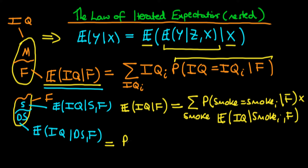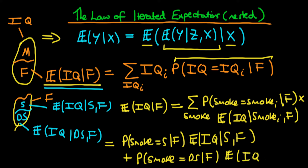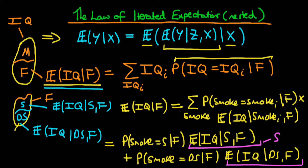So there are just two cases to sum over. First, the probability that smoking equals S — an individual smokes — given that they are female, times the expected value of IQ given that individual smokes and given that they're female; plus the probability that an individual doesn't smoke, given that they are female, times the expected value of IQ given that they don't smoke and also given that they are female. This gives us our intuitive result: we work out the average level of IQ in the two subpopulations — smokers and non-smokers — and if we multiply these two averages by their relative proportions and add them together, that gives us the overall average level of IQ within the female population.